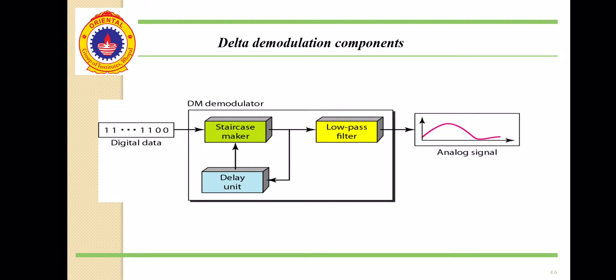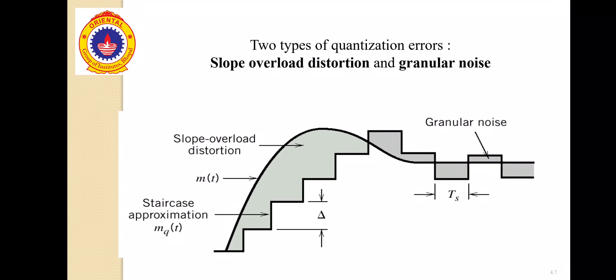Delta Modulation Demodulation Component or Delta Demodulation Receiver. In the Delta Modulation Receiver, the three important blocks are Staircase Maker, Delay Unit, and Low Pass Filter. The staircase output and its delayed version go to the Low Pass Filter. Low Pass Filter rejects the carrier signal and passes only the message signal and we get our analog signal.